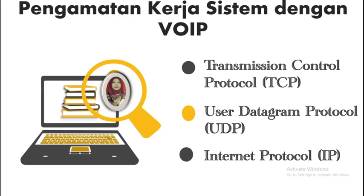Tadi merupakan tahapan-tahapan dalam prosedur komunikasi. Sekarang, kita akan menuju ke pengamatan kerja sistem dengan VoIP, di mana di dalam kerja sistem dengan VoIP itu dibagi menjadi tiga, yaitu Transmission Control Protocol atau TCP, kemudian User Datagram Protocol atau UDP, dan Internet Protocol atau IP.